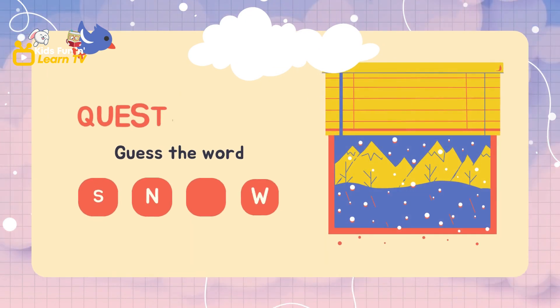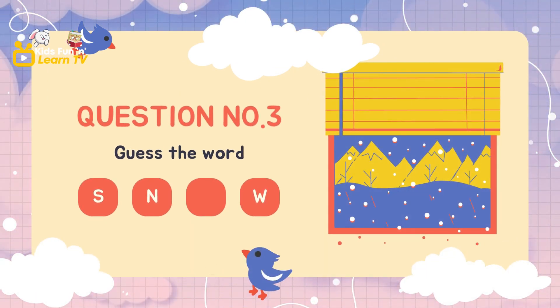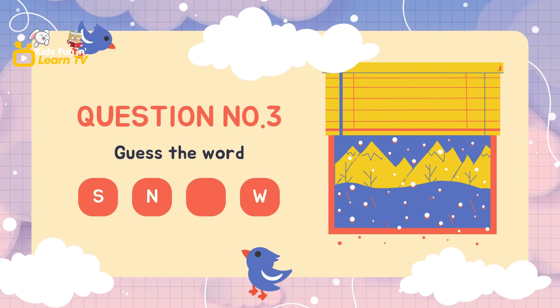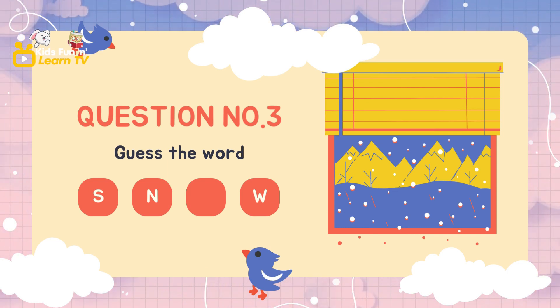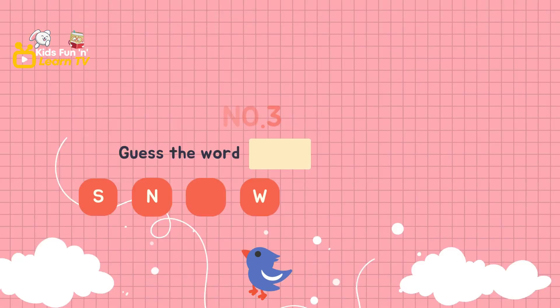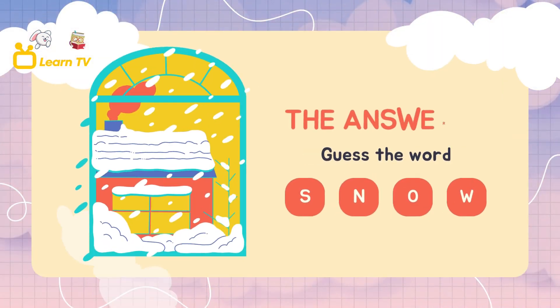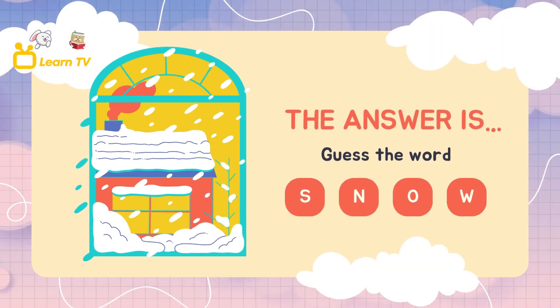Question number three. Guess the word. S, N, and an empty box. The answer is snow.